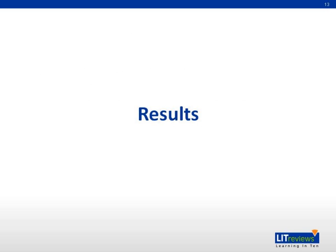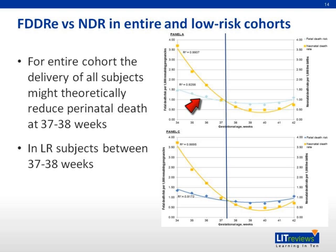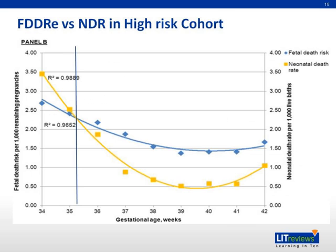We will now look at the results of the analysis. The authors plotted the fetal death rates due to non-delivery in blue and the neonatal death rates in yellow. The best gestational age for delivery is deemed to be the point when the risks of fetal and neonatal deaths are equal. This is between 37 and 38 weeks in both the general population and the low-risk pregnancy group. For the high-risk pregnancy group, the best gestational age was between 35 and 36 weeks. It is arguable why the best gestational age is defined as when both rates equalize rather than when both rates are at their lowest.